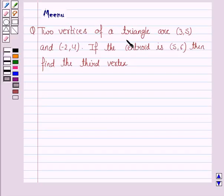Two vertices of a triangle are (3,5) and (-2,4). If the centroid is (5,6), then find the third vertex.